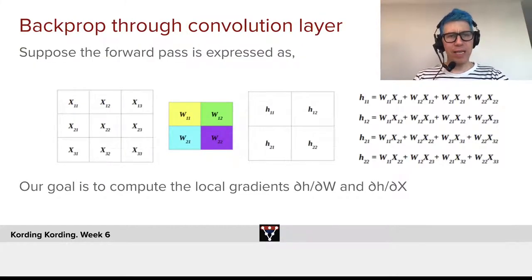So effectively, if we want to backprop through a convolutional layer, we can express the forward pass as this.